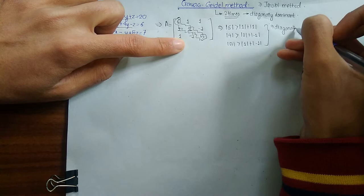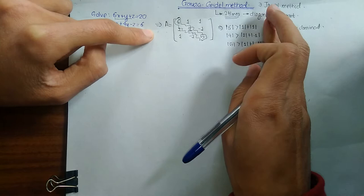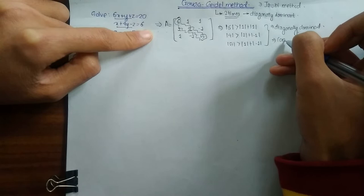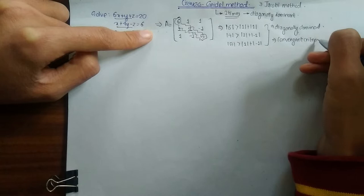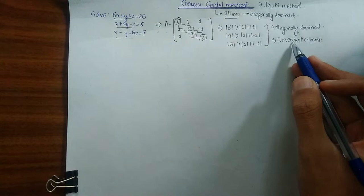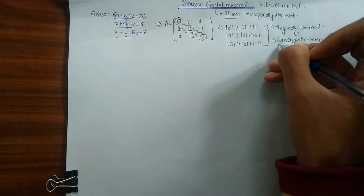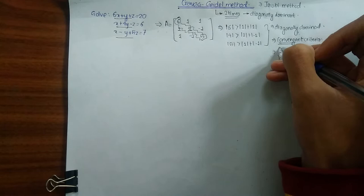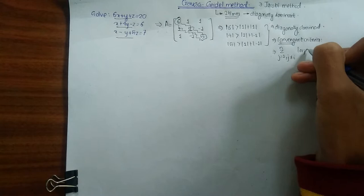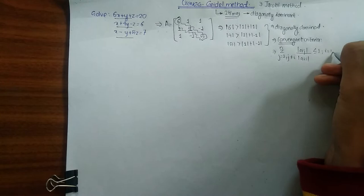So for such equations only we are going to use the Gauss-Seidel and Jacobi methods. This condition is called the convergence criteria. If our equation is not diagonally dominant, the roots are not going to converge — they will diverge and we won't reach any particular answer. The convergence criteria can be written as: the sum over j (where j does not equal i) of |a_ij| divided by |a_ii| must be less than or equal to one.